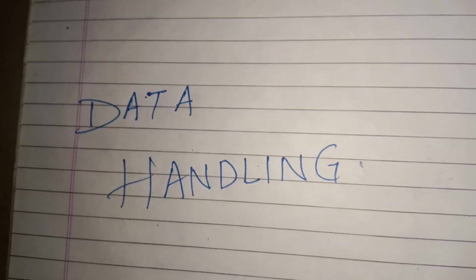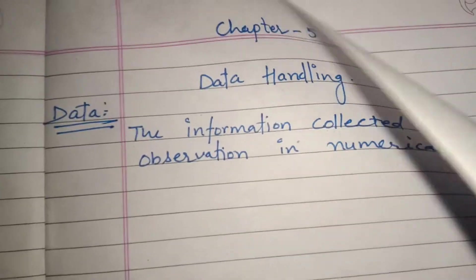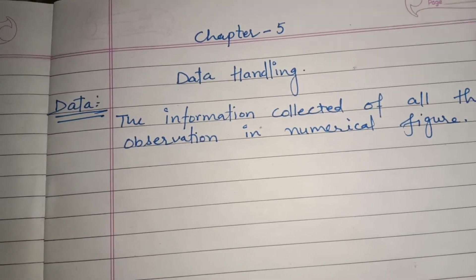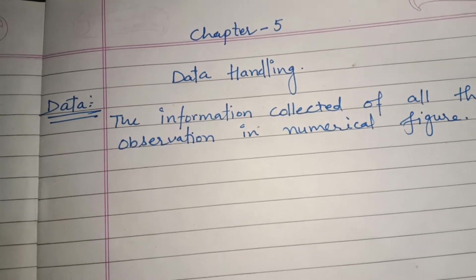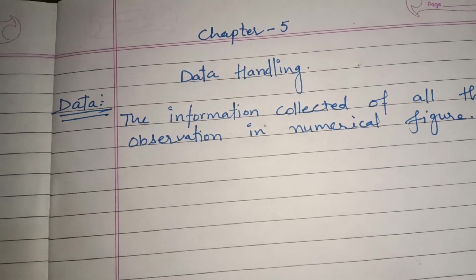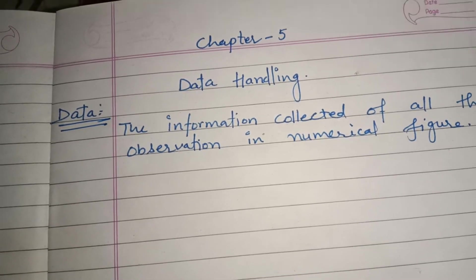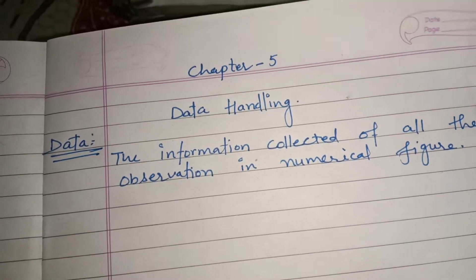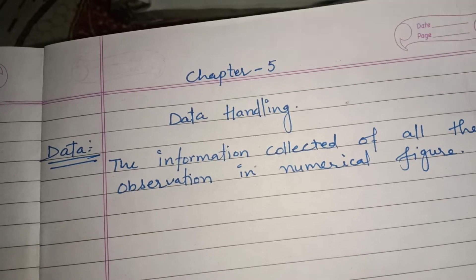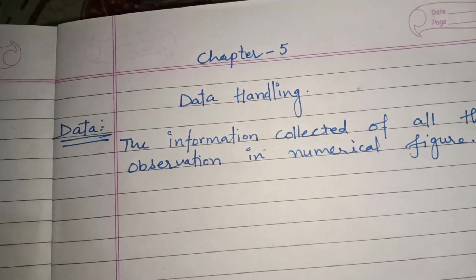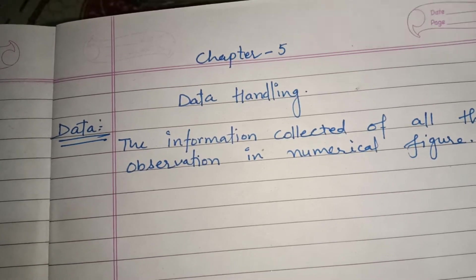First, we talk about what is data. The information collected of all the observations in numerical figure is called data. Data is usually collected in the context of the situation that we want to study. For example, a teacher may like to know the average height of the students in her class. To find this, she will write the height of all the students, then organize the data in a systematic manner, and then interpret it accordingly. Sometimes data is represented graphically to give a clear idea of what it represents.